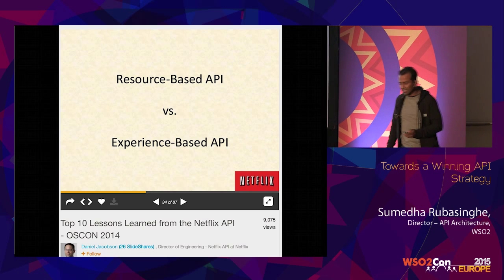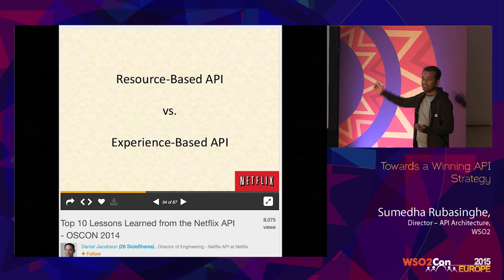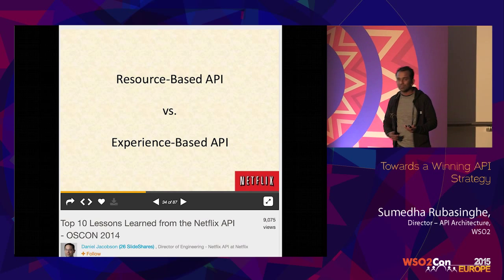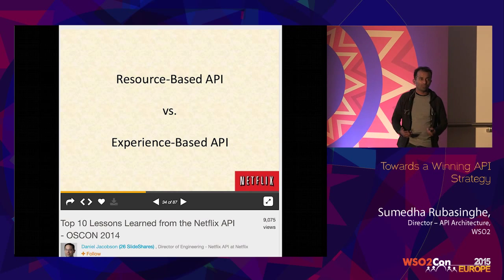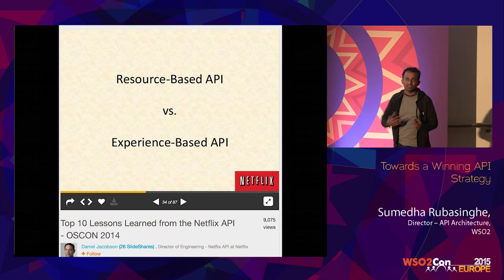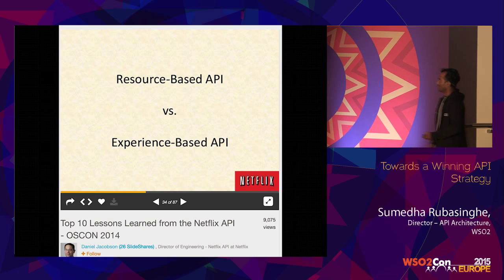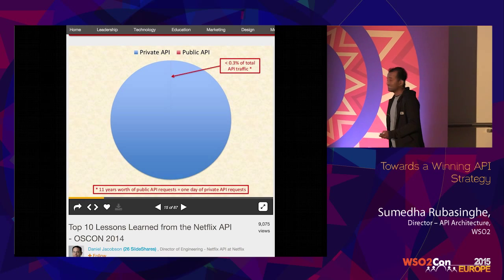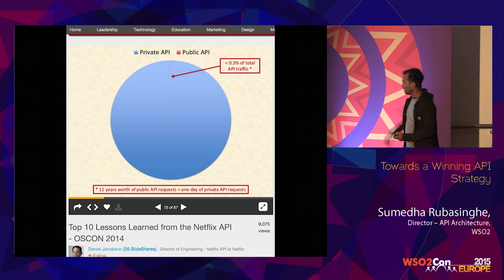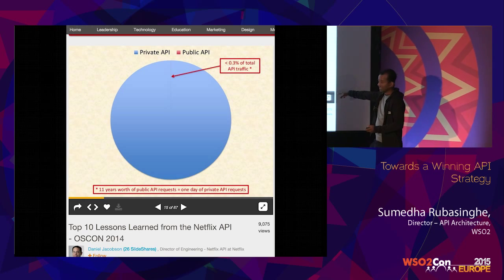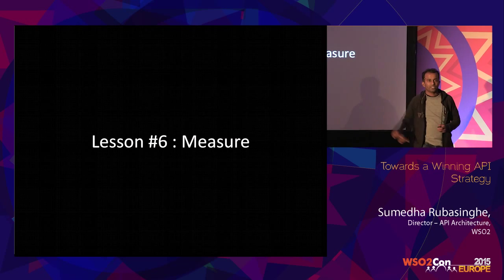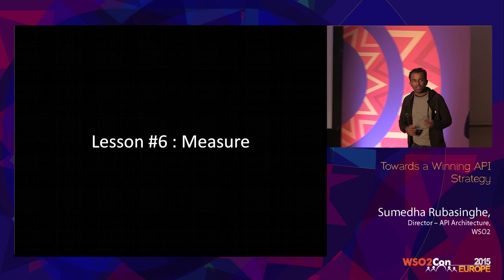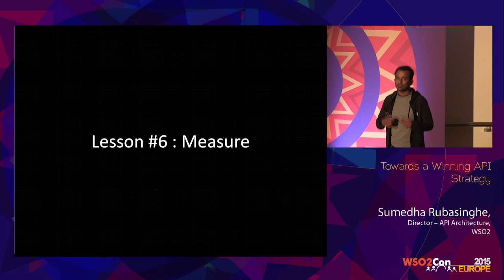What I want to highlight here is you should evolve. Netflix is considered one of the best REST-based APIs, but still, after a while, after going through the statistics and their objectives and motives, they kind of redefined what they had exposed. So it's not the end of the world. This itself is a very good introduction into the next topic: 11 years' worth of public API requests equals one day of private API requests — which means you should measure. When you have your APIs exposed, you should keep on measuring them.